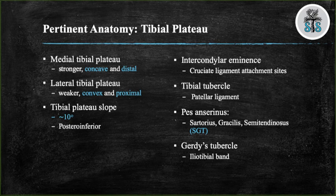The intercondylar eminences are where the ACL and PCL attach distally. The tibial tubercle is the distal attachment of the patellar tendon. The pes anserine is where the sartorius, gracilis, and semitendinosus attach on the anterior medial surface of the proximal tibia — also known as the Goosefoot. On the opposite side of the tibia is Gerdy's tubercle, which is the insertion site for the iliotibial band.